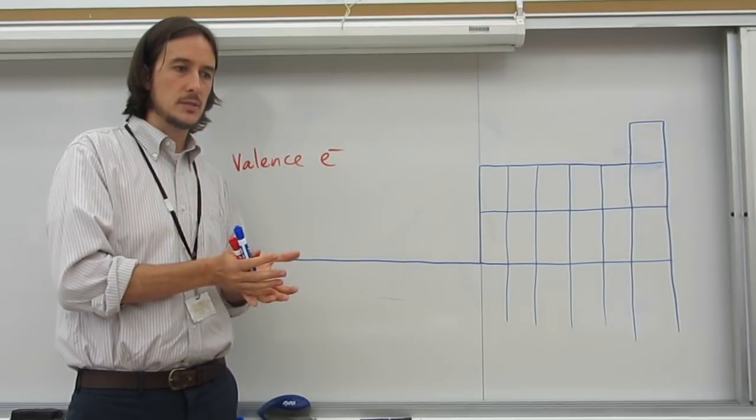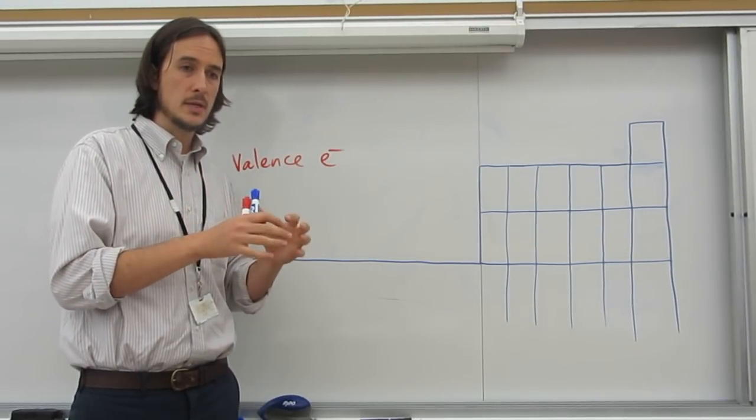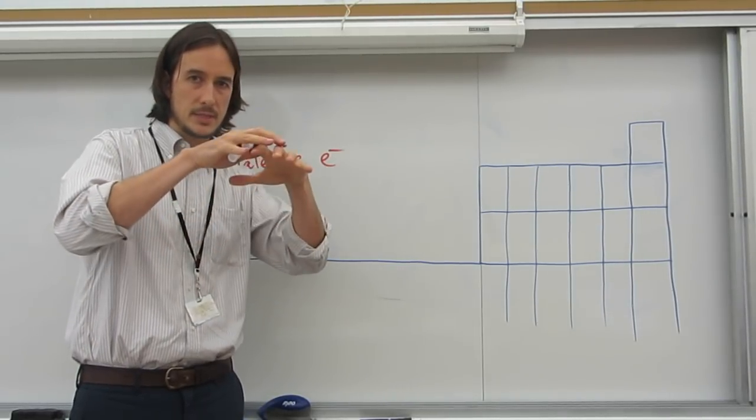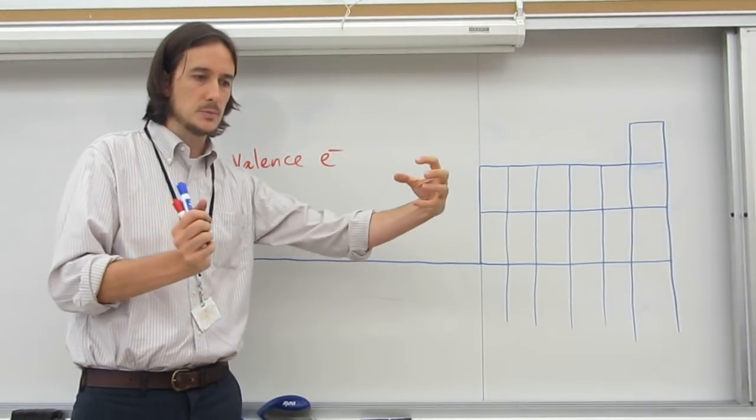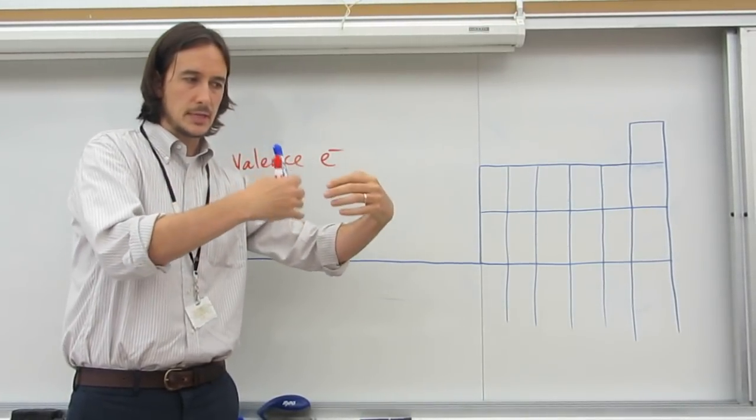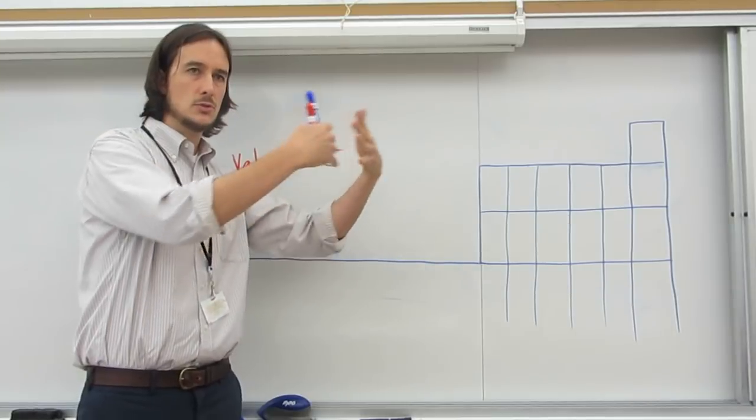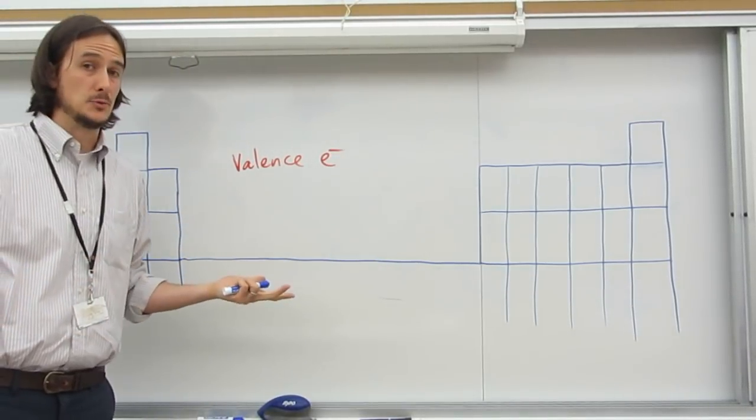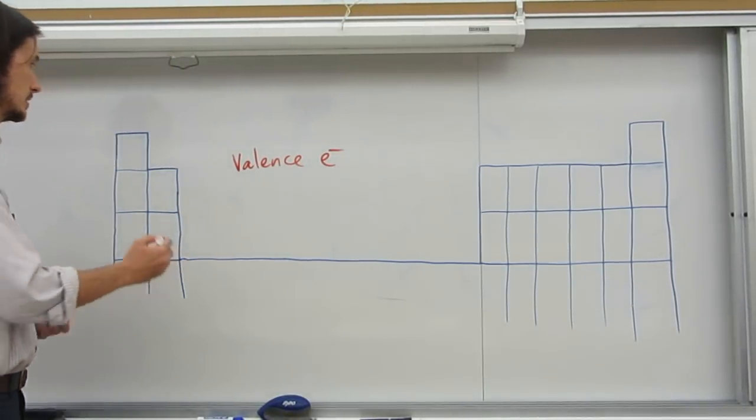The outermost electrons of an atom are important because they tend to react, right? That's the outside of the atom. When atoms bump into each other, those are the electrons that are closest to other atoms. So we're just gonna count. It really is easy.